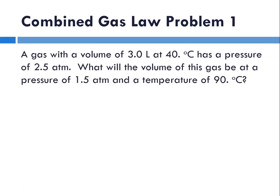So problem one, a gas with a volume of three liters at 40 degrees C has a pressure of 2.5 atmospheres. What will the volume of this gas be at a pressure of 1.5 atmospheres and a temperature of 90 degrees C? So let's identify P1 is 2.5 atmospheres, P2 is 1.5 atmospheres, V1 is 3 liters, V2 is what we're solving for. T1 is 40 degrees C. So when you add 273, you get 313 Kelvin. 90 degrees C is our T2, add 273 to it, and we get 363.